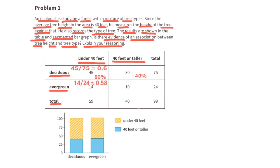14 of the 24 evergreen trees are under 40 feet — that's about 58% — meaning the remaining 42% of the evergreen trees are 40 feet or taller. In total, there are 59 trees under 40 feet, both deciduous and evergreen, out of a total of 99 trees. That's almost 59%, so the remaining 41% of trees are 40 feet or taller.